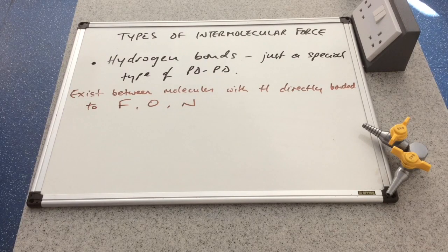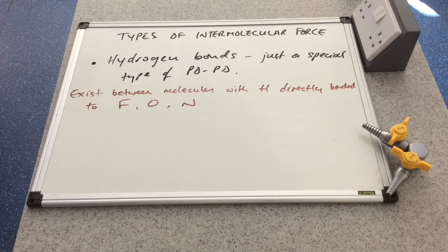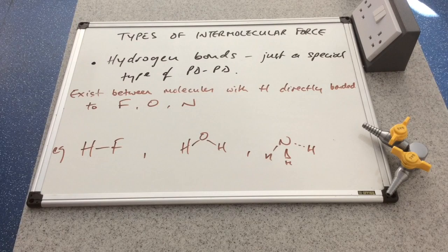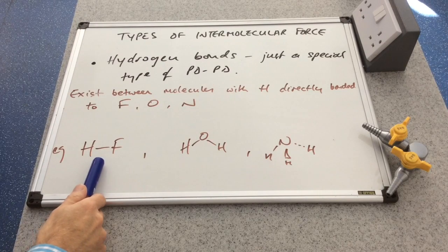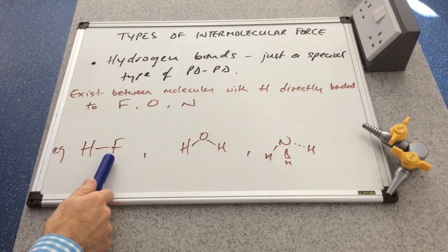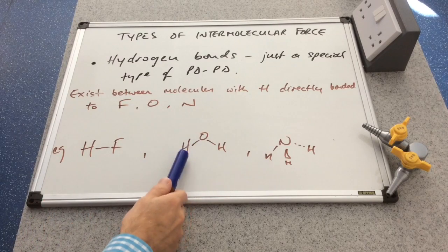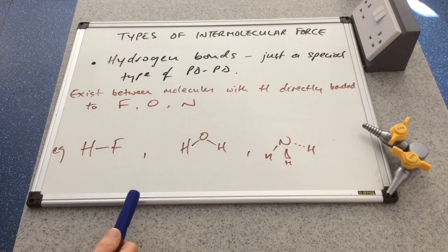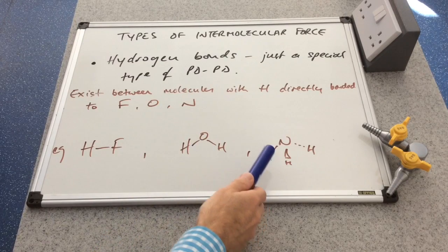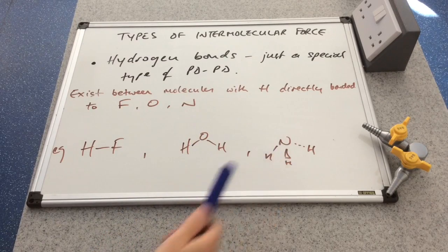Your molecule must have a hydrogen directly bonded to either a fluorine, an oxygen, or a nitrogen. There are three examples of molecules that have hydrogen bonds between them: hydrogen fluoride — hydrogen directly bonded to a fluorine; water — hydrogen directly bonded to an oxygen; and ammonia — hydrogen directly bonded to a nitrogen.